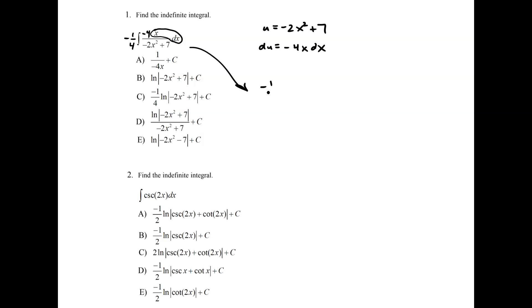And this can be rewritten as negative 1/4 integral of du over u because negative 4x dx is the du and negative 2x squared plus 7 is u. So this is equivalent to negative 1/4 ln absolute value of u plus c. And then we can just back-substitute in for u. So negative 1/4 ln absolute value of negative 2x squared plus 7 plus c. And so that appears to be choice c.